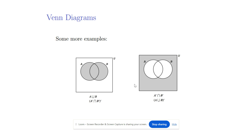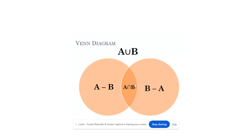These are more examples on Venn Diagram. On the left hand side, A union B is shown by the Venn Diagram, and on the right hand side, A complement intersection B complement is shown using the Venn Diagram. The shaded part in the box shows A complement intersection B complement — that is, the number of elements which are not in A and B. The whole shaded part shows the number of elements in A union B, and the darker orange color shows A intersection B, which represents the common elements from A and B.